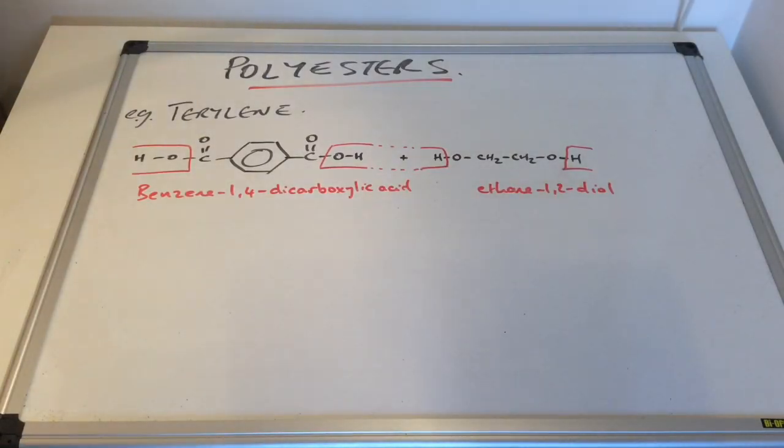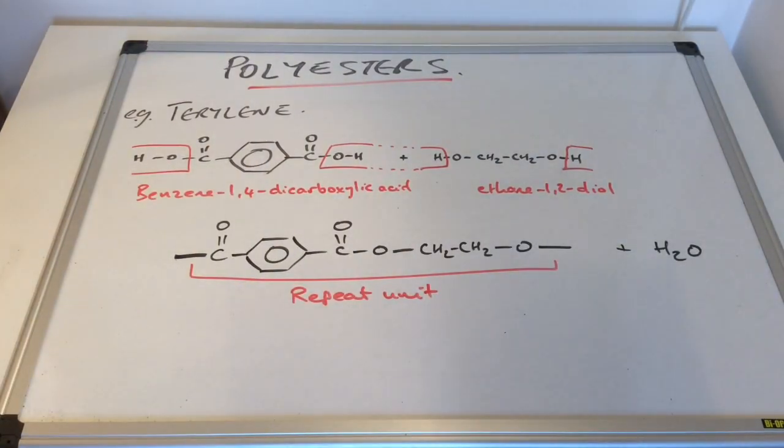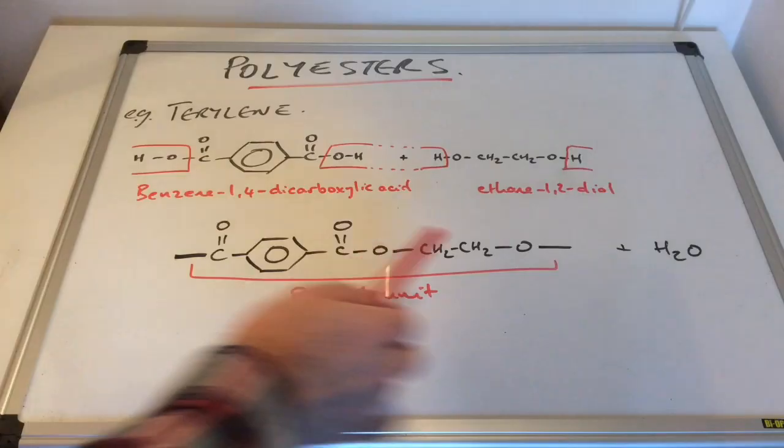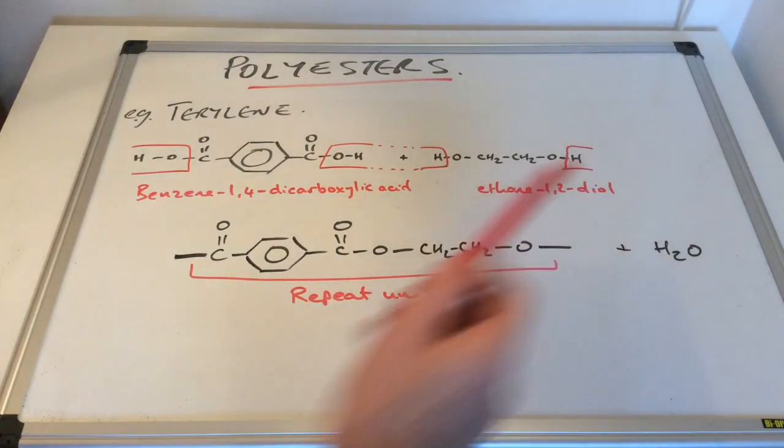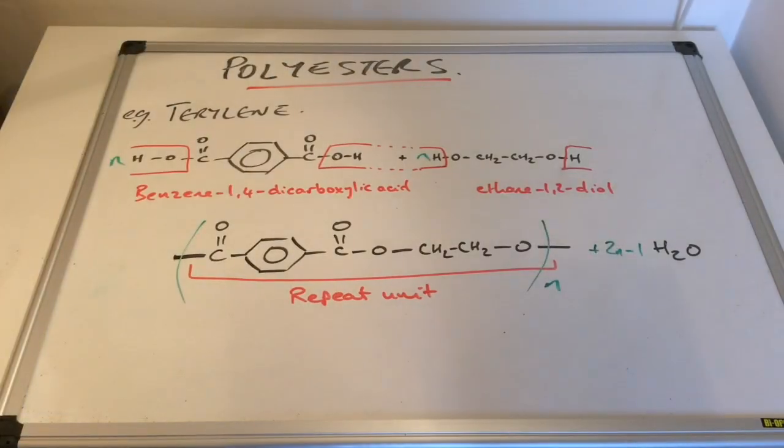So we'll join those together now and see what we create. So there it is, there's the repeat unit. Remember to put the end bonds in to show that this is a continuous process. Clearly showing the ester group there. Remember this is a polyester. And don't forget the water molecule. And you can see I've added some N's now in green.